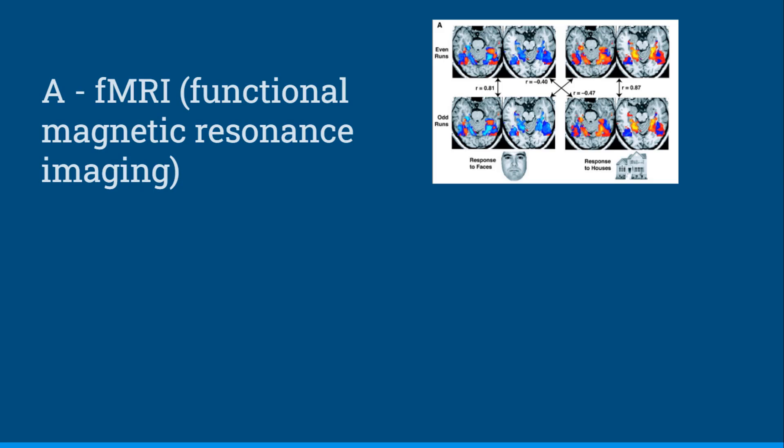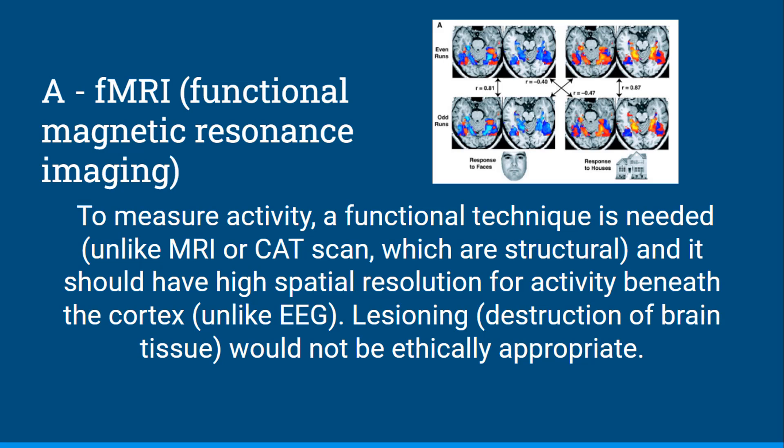The answer is fMRI — functional magnetic resonance imaging. He wants to measure brain activity, so he needs a functional technique, which eliminates MRI and CAT scan, both structural techniques. High spatial resolution is also needed for activity occurring beneath the cortex in the amygdala, so EEG wouldn't be well suited since it lacks that spatial resolution for subcortical areas. And lesioning — the destruction of brain tissue — would not be ethically appropriate for this kind of study.